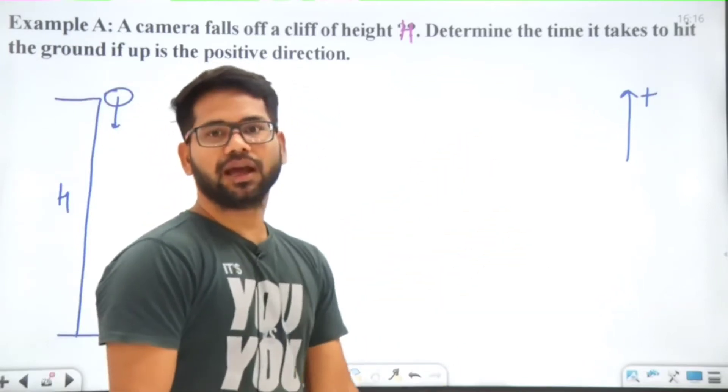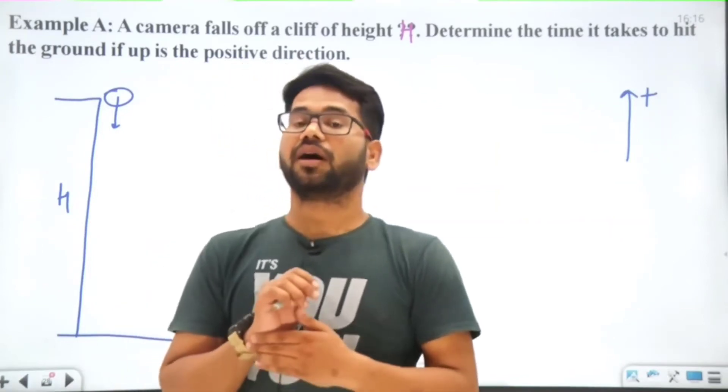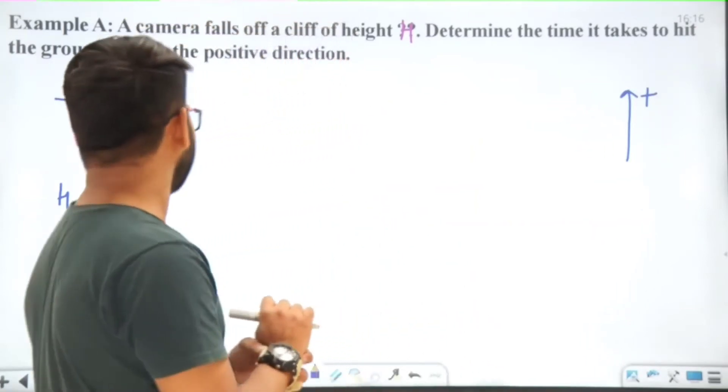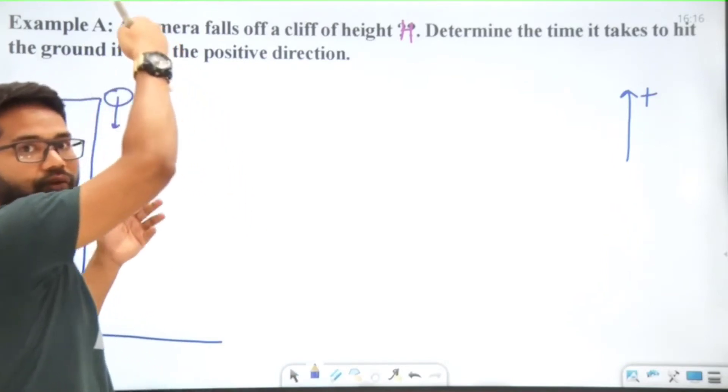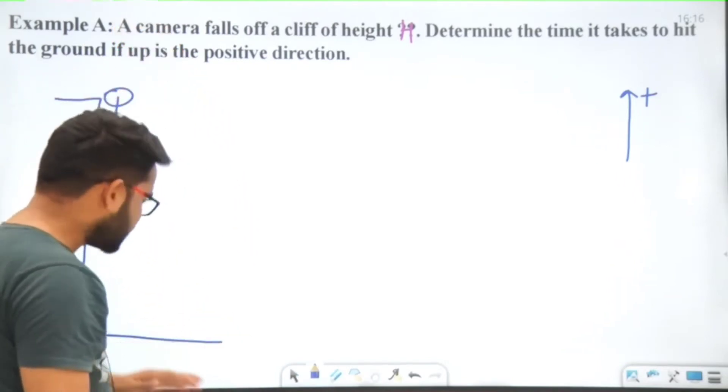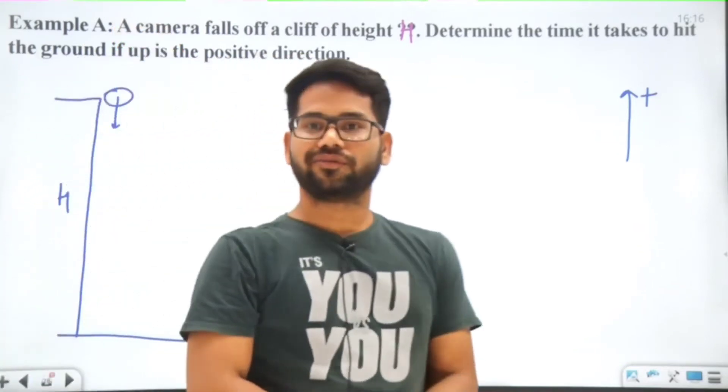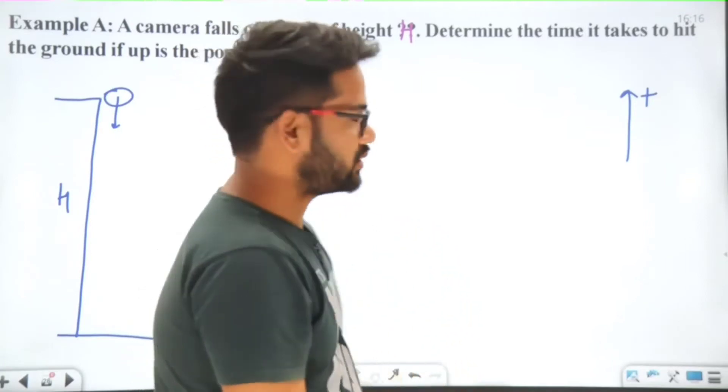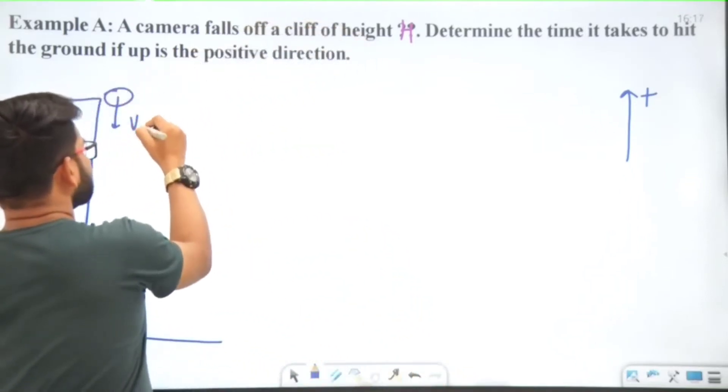If something is going to fall from some height to the ground, it's a case of one-dimensional motion. This is the initial situation, so we can write this as initial velocity VI.